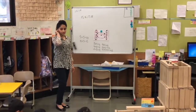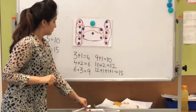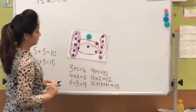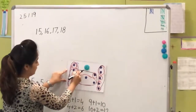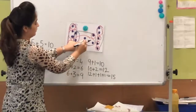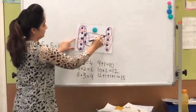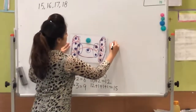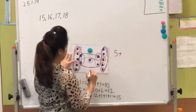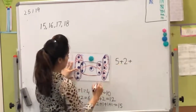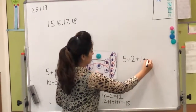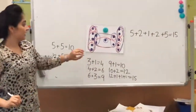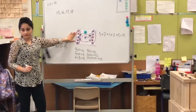I saw five — the left five. And also two, the two next to the five. Then I saw the one. Then I saw the other two. Then I saw the five. Can you tell me the equation for this? Five plus two plus one plus two. How many dots are here together? Fifteen.